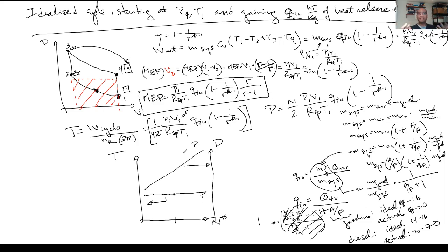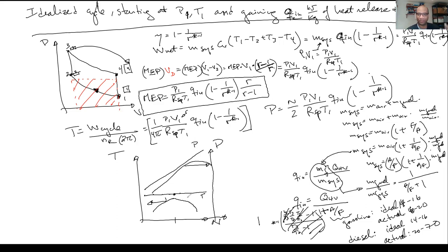For the power, it's basically the constant torque multiplied by 2 pi N — so it's going to be a straight line with N. So this is the torque curve: constant. And the power is linear with N. That's the answer from the idealized cycle. Now the question is: how do we get this to match our real measurement, which shows torque going down and power curving over? We have to include more physical processes on top of just isentropic compression and heat addition. But this gives us a baseline that we can work against.